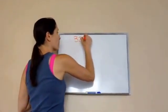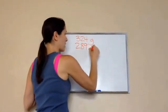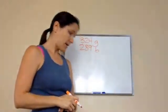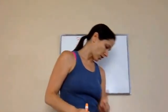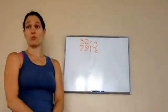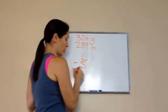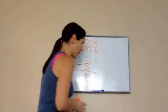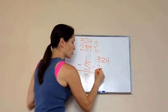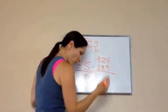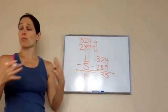There were 324 girls and 289 boys in the contest. The question asks: how many fewer boys were there than girls in this contest? This is a subtraction problem. We take the larger number minus the smaller number to get our difference. 324 is larger — that's the girls. 289 is the boys. When we subtract, we get 35. So the answer is: there are 35 fewer boys than girls.